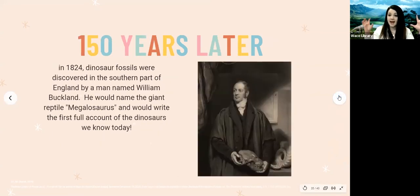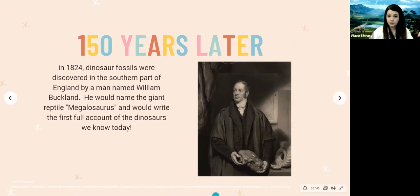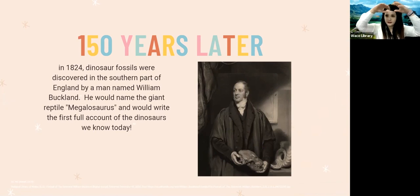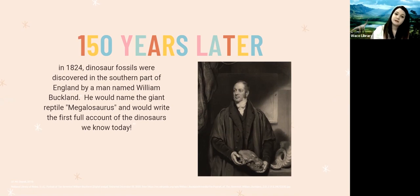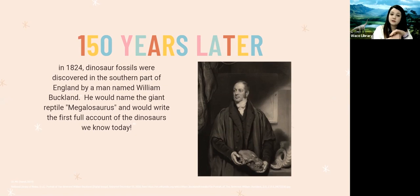About 150 years after that, in 1824, dinosaur fossils were discovered in the southern part of England by a man named William Buckland. The fossils he found were concluded to all be part of one giant reptile, and he decided to name the reptile Megalosaurus. He wrote a full account of this dinosaur, considered to be one of the first full accounts of dinosaurs that we know of.